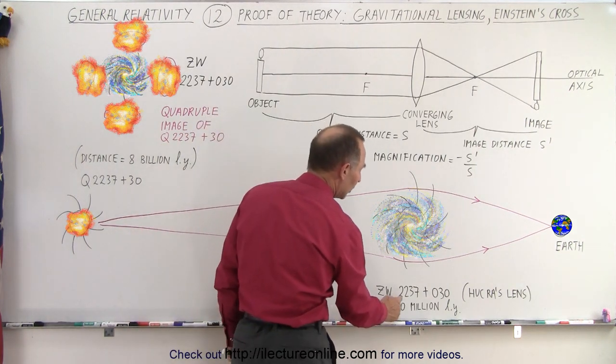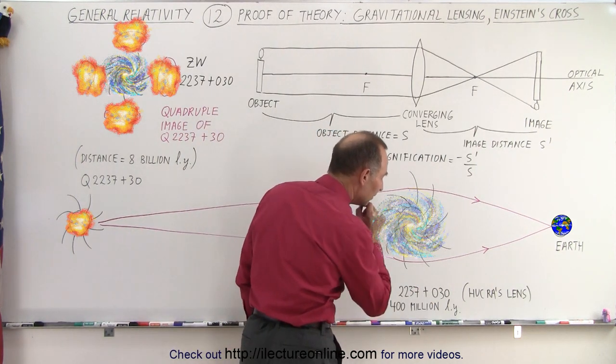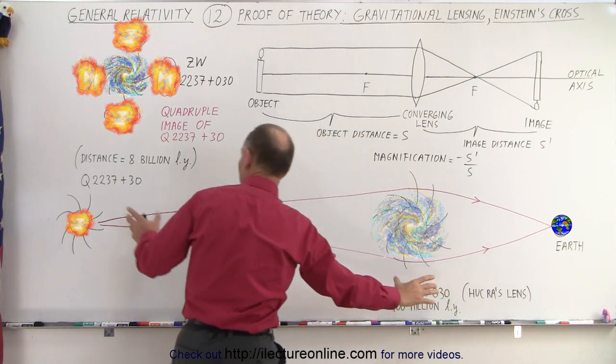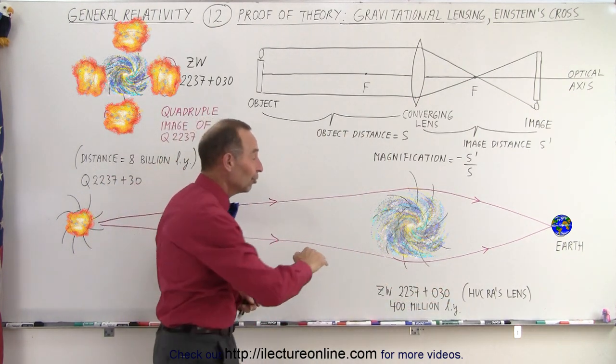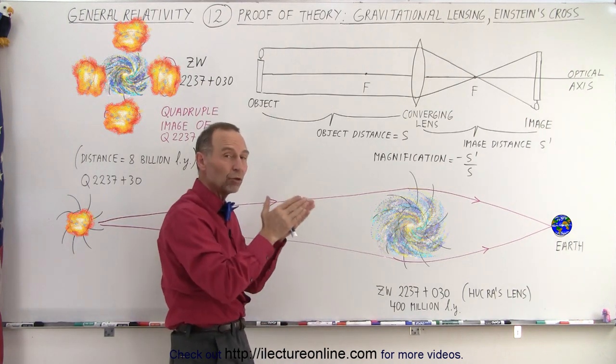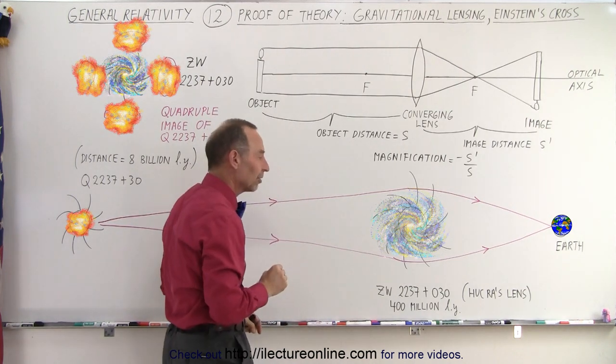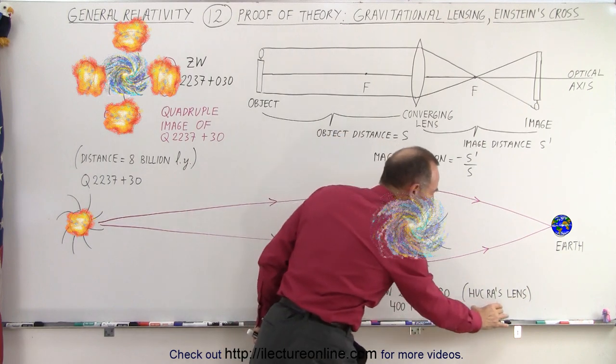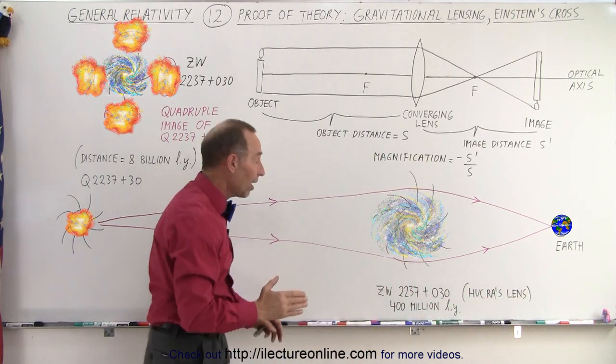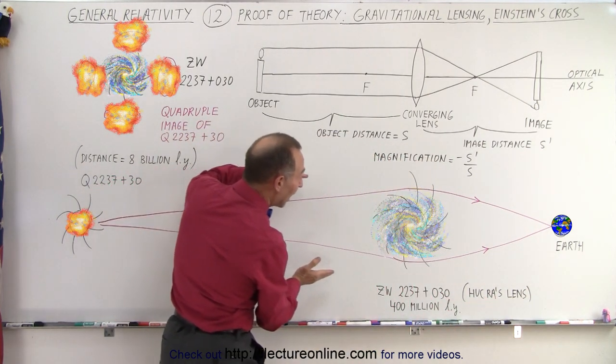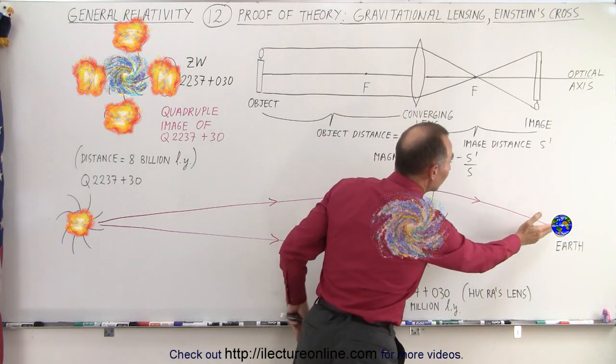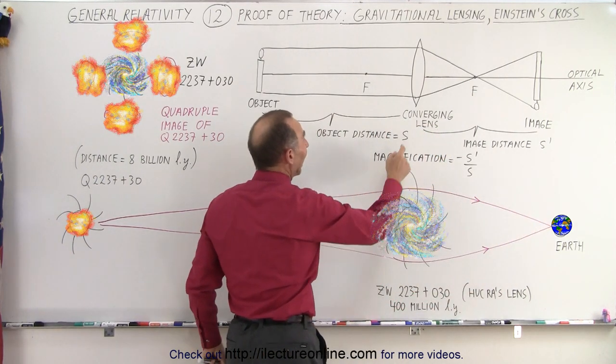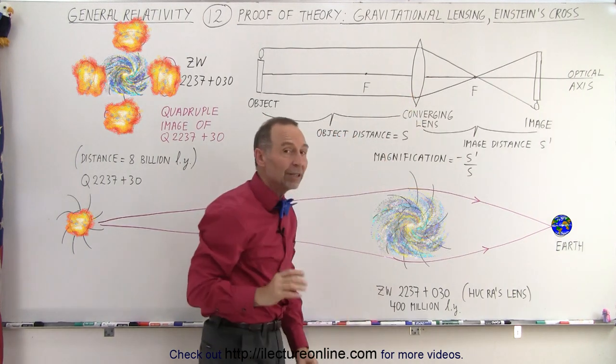That galaxy is known as ZW 2237 plus 030. These numbers look like they're exactly the same because they're lined up perfectly, and those numbers indicate the direction in which you want to look to see those particular objects. This is known as Huchra's lens. And it turns out that the light that passes by that galaxy then comes back together and forms an image where the Earth is and it acts just like a converging lens.